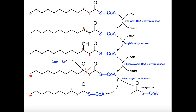Beta-oxidation is named because it's the beta-carbon of the fatty acid that's actually going to be oxidized. Before we go into the enzymes, let's talk about the nomenclature of the fatty acid. We have a thioester group; the carbonyl carbon is not labeled with Greek symbols. The carbon adjacent to the carbonyl is the alpha-carbon, which is not oxidized in beta-oxidation. It's the beta-carbon, adjacent to the alpha-carbon, that is oxidized. The terminal carbon, regardless of its number, is called the omega-carbon. We're going to look at a 12-carbon fatty acid undergoing beta-oxidation.